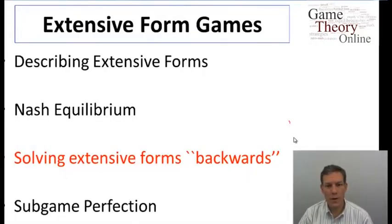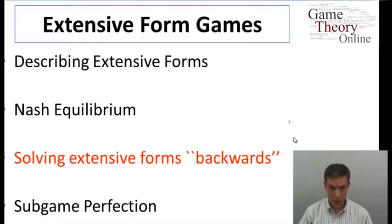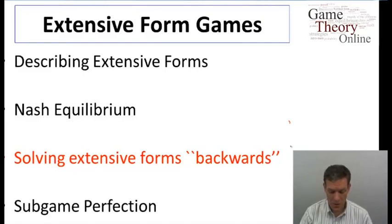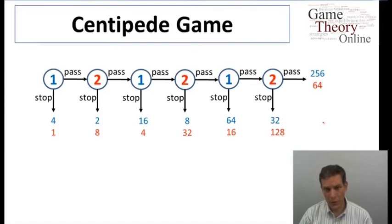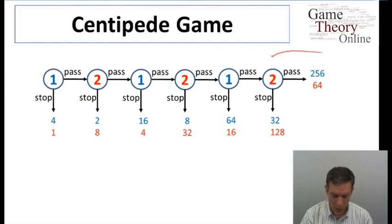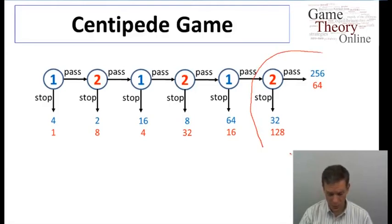Let's continue our study of extensive form games. Now let's look at a different form of reasoning by which we can make predictions in the game — in particular, let's look at solving games backwards. We'll look back at the centipede game and begin using reasoning that starts with the simplest possible decisions first, then moves back to more difficult ones. We start by looking at the last part of the game — decisions just preceding terminal nodes.